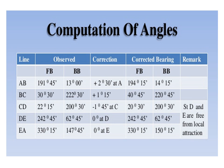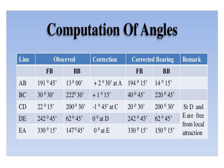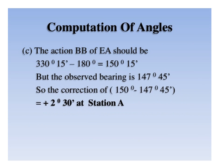You can calculate the back bearing of line EA by subtracting 180 degrees from 330 degrees 15 minutes. The corrected back bearing of line EA is 150 degrees 15 minutes, but the observed bearing was 147 degrees 45 minutes. Therefore the correction is 150 degrees 15 minutes minus 147 degrees 45 minutes, which equals plus 2 degrees 30 minutes. Whenever the corrected bearing is more than the observed bearing, the correction is considered as positive.